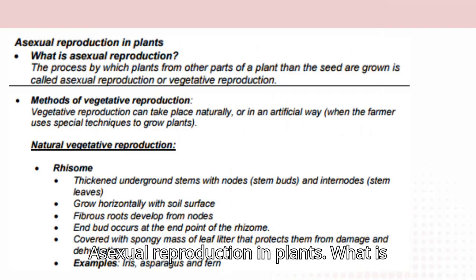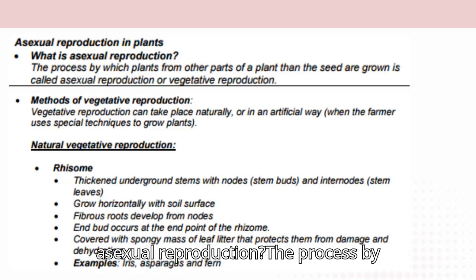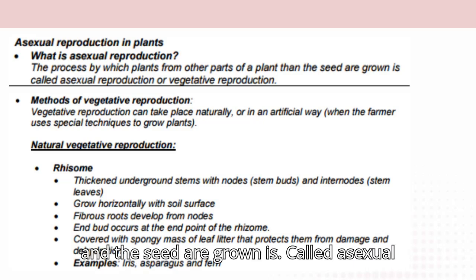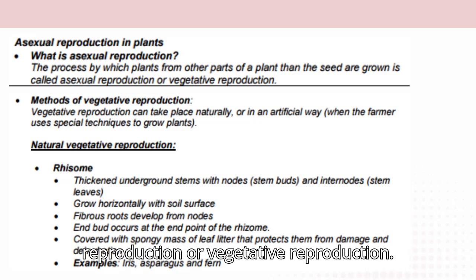Asexual reproduction in plants — what is asexual reproduction? The process by which plants are grown from other parts of a plant rather than from seed is called asexual reproduction or vegetative reproduction.